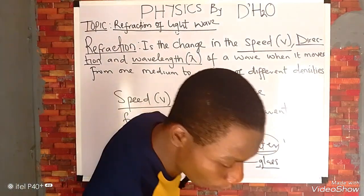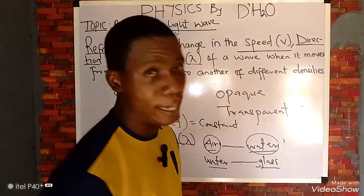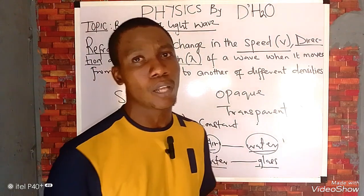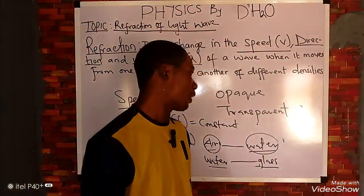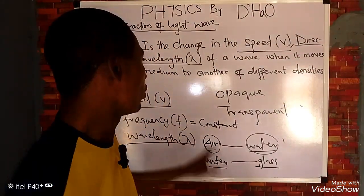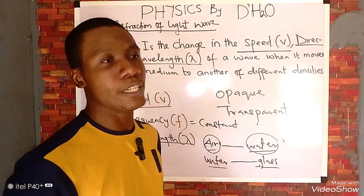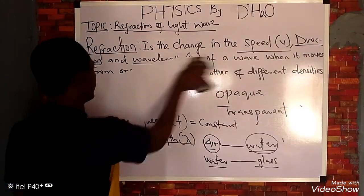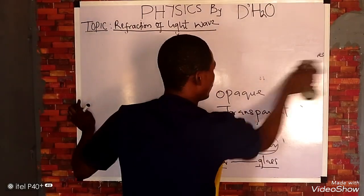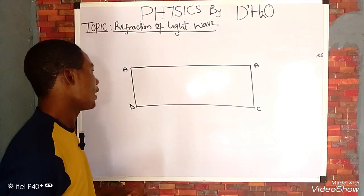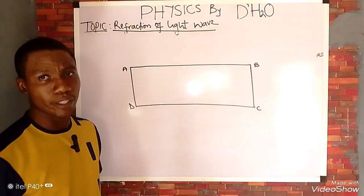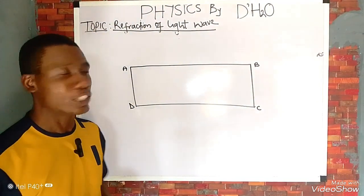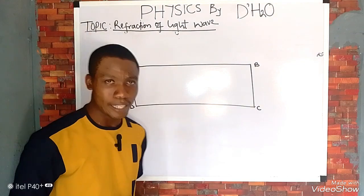For today's class, we are going to be looking at the refraction of light wave in a rectangular glass prism. We have refraction of light in a triangular glass prism and refraction in a rectangular glass prism, but today we will focus on the rectangular glass prism, such as the one you are seeing right now.